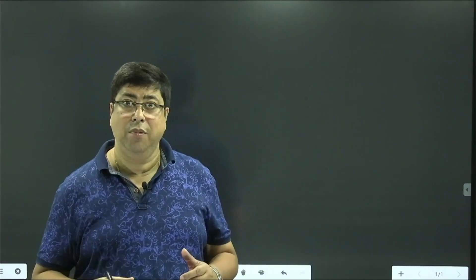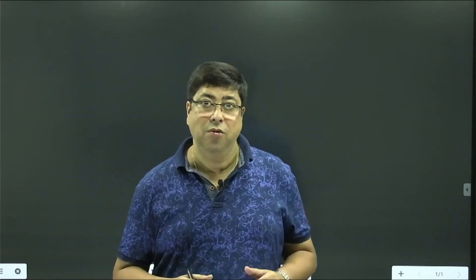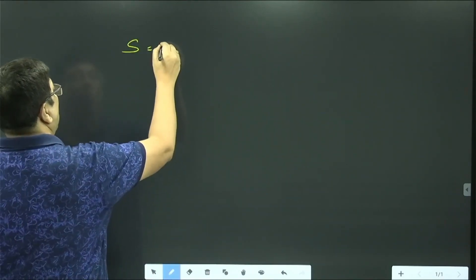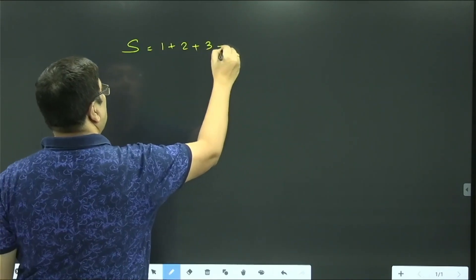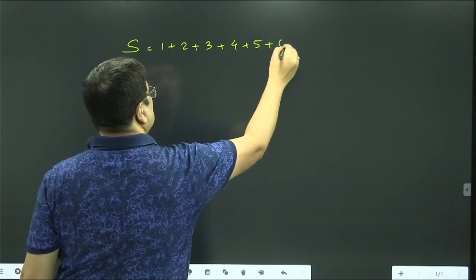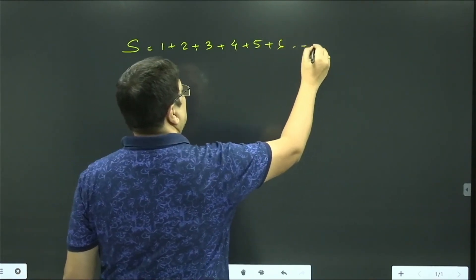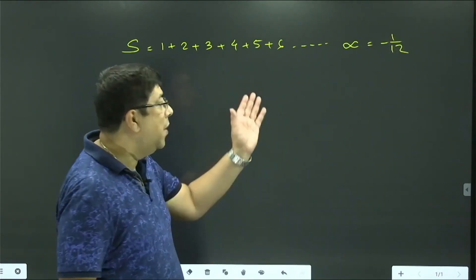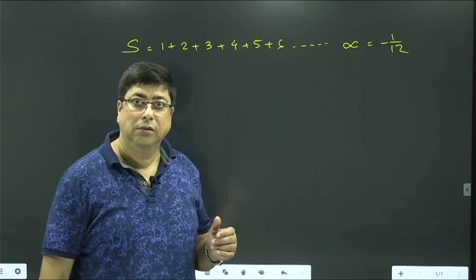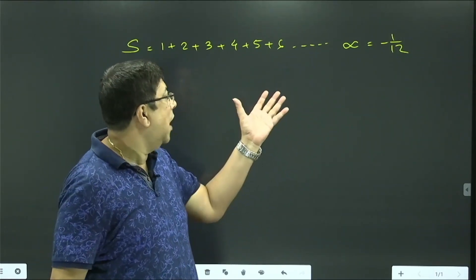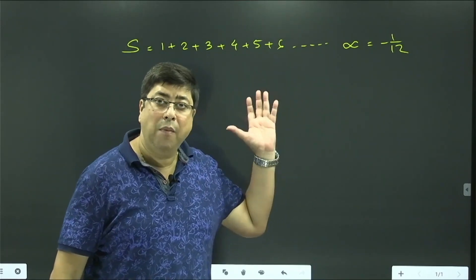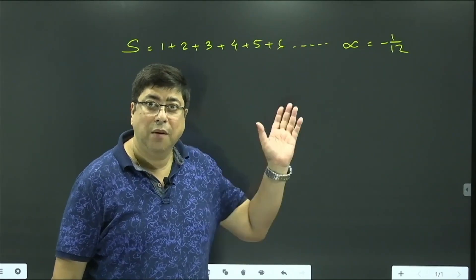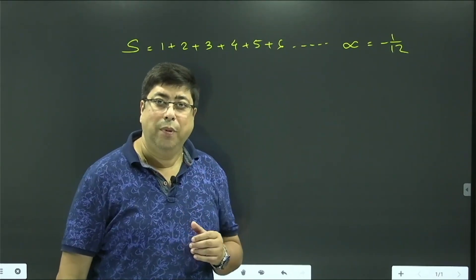No one could believe what he proved at that time, and it is astonishing even now. The result is: S = 1 + 2 + 3 + 4 + 5 + 6 + ... up to infinity = -1/12. Whenever I see this, I cannot believe how it is possible that the sum of the natural numbers is -1/12. This is the Ramanujan paradox.